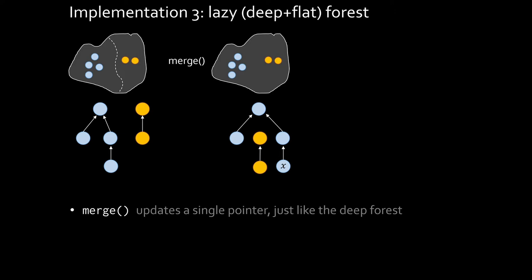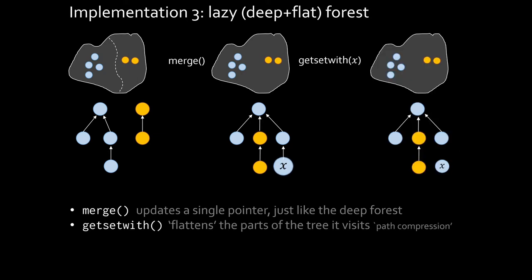It starts off looking very much like the deep forest. Whenever you merge two trees, we'll just update the parent pointer of one of them. And when we call get set with, we have to do some work. We had to walk up the tree to find the route once. Let's walk up it a second time and update all of the nodes to point to the route that we found. This is called path compression.